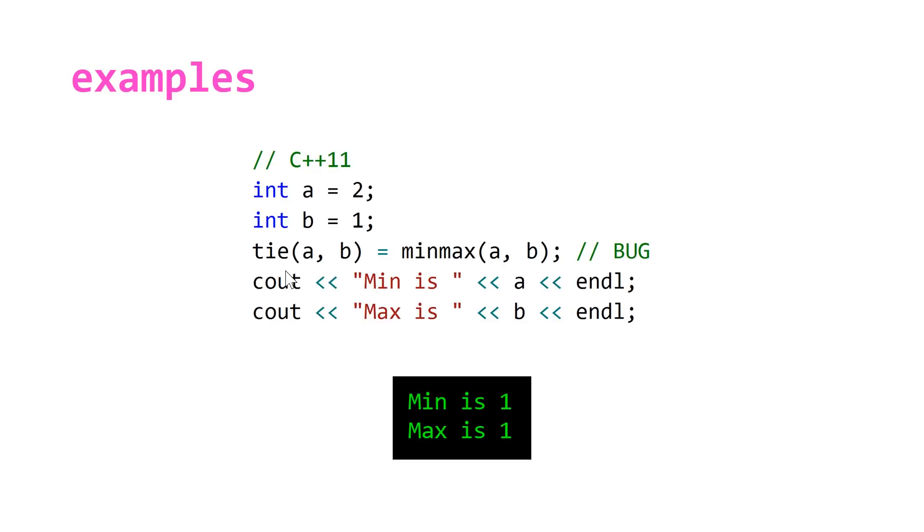So when you set your a to the minimum value which here is going to be 1, when it comes time to set b equal to the maximum value which was 2, it's now going to be gone so it's going to get 1 as well.